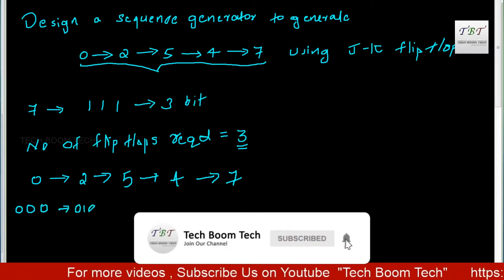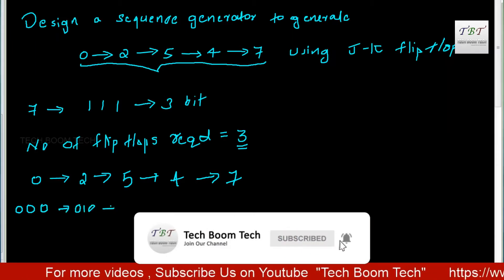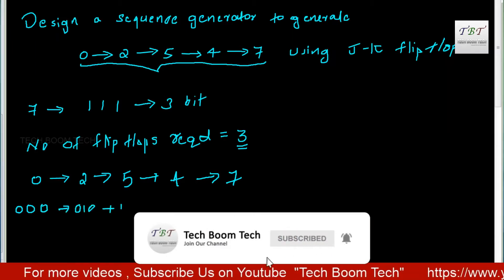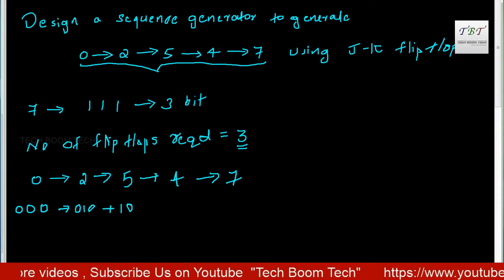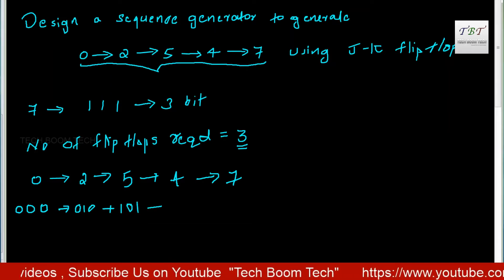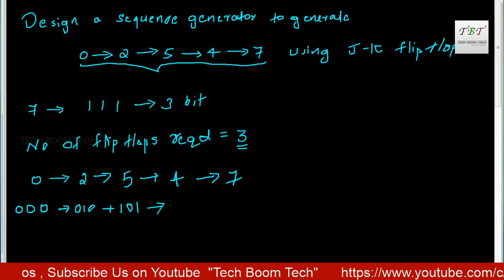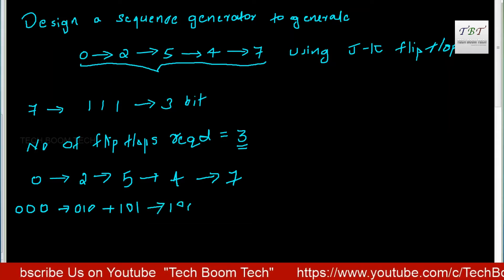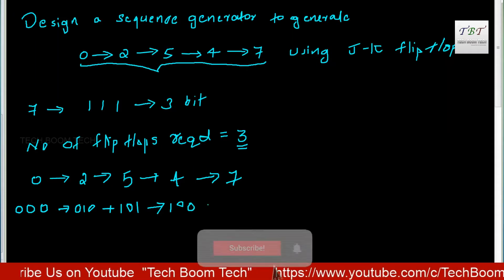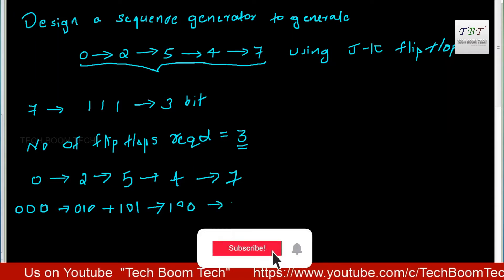The binary representations of the states are: 0 is 0,1,0 and 1 is 1,0,1 in three-bit binary form.